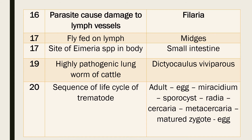Question 20: Sequence of the life cycle of a trematode. Answer: The sequence is — first there is an adult worm, they lay eggs, then development of miracidium, then sporocyst, then redia, then cercaria, then metacercaria, then mature zygote, and finally egg again. So this is the sequence of the life cycle of a trematode.